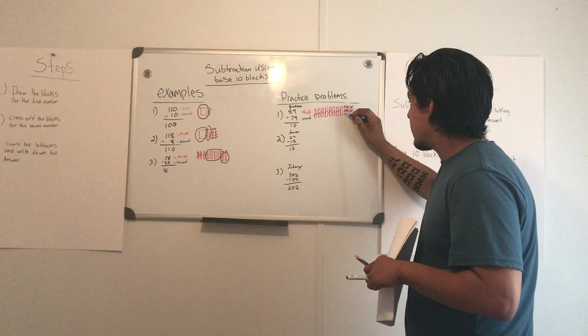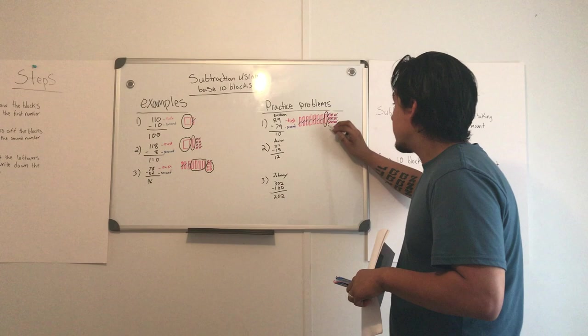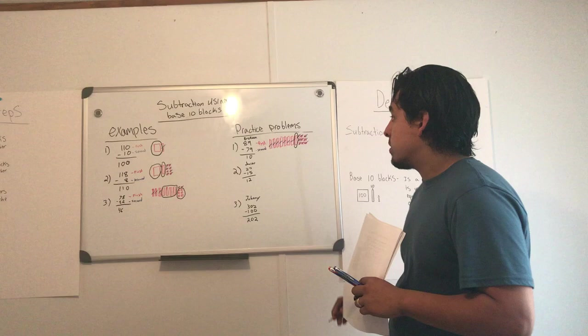And then for the final step, she counted the leftovers, so she knows that there is only one bar left over, so that means there is 10 left over, so 89 minus 79 is 10. Good job.